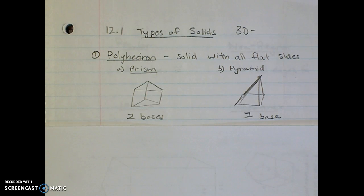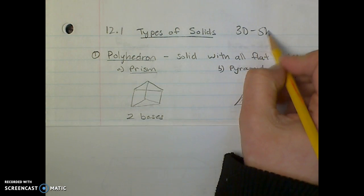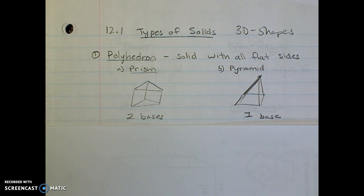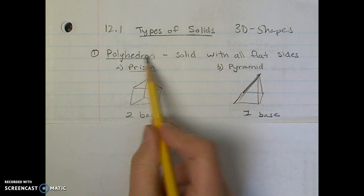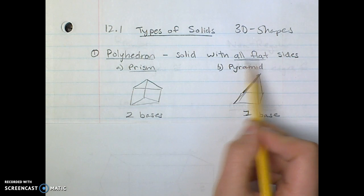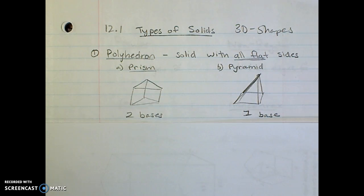Hey guys, this video is about types of solids or 3D shapes. The very first thing we'll identify is what is a polyhedron. A polyhedron is just a solid with all flat sides.